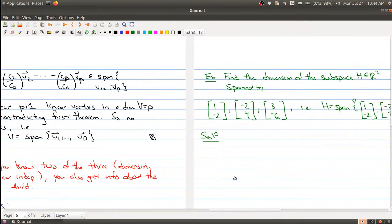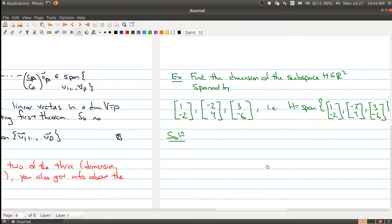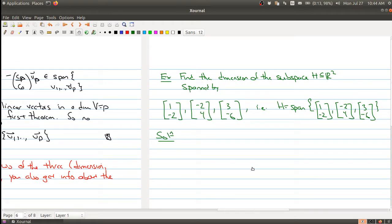So let's kind of just do some examples involving dimension. Hopefully this will help. Okay, so here I'm asking, well, find the dimension of the subspace in R² spanned by these three vectors. Okay, i.e., here is H. H is the span of these vectors.